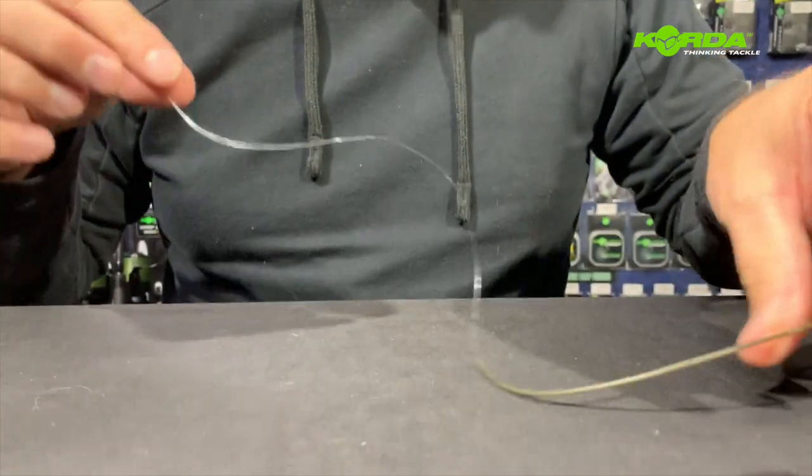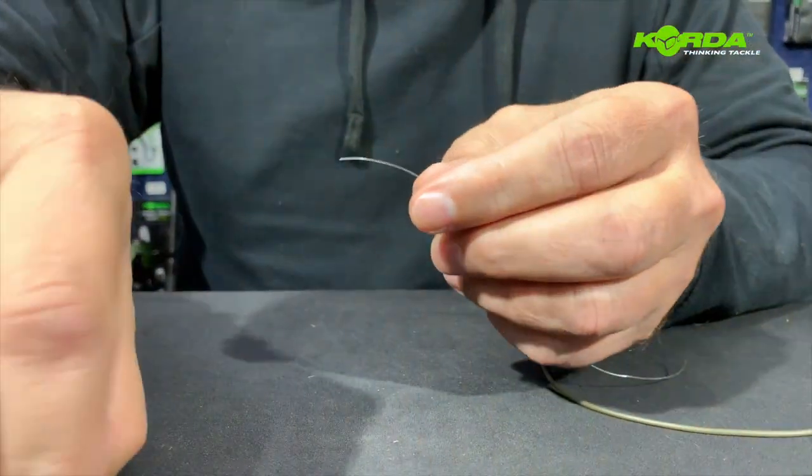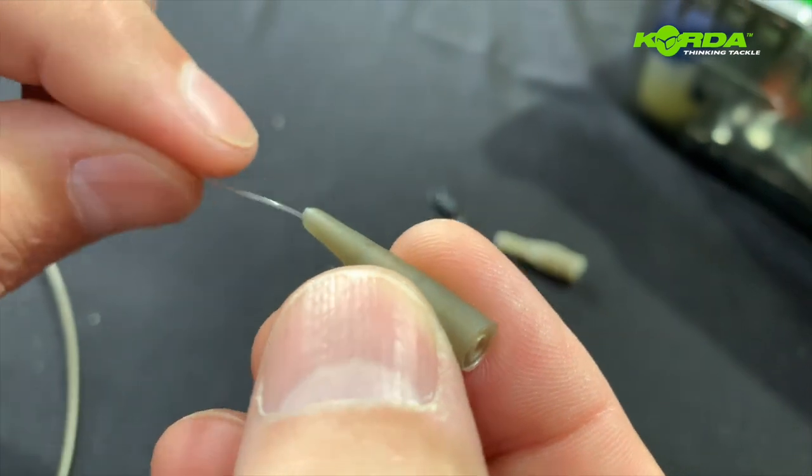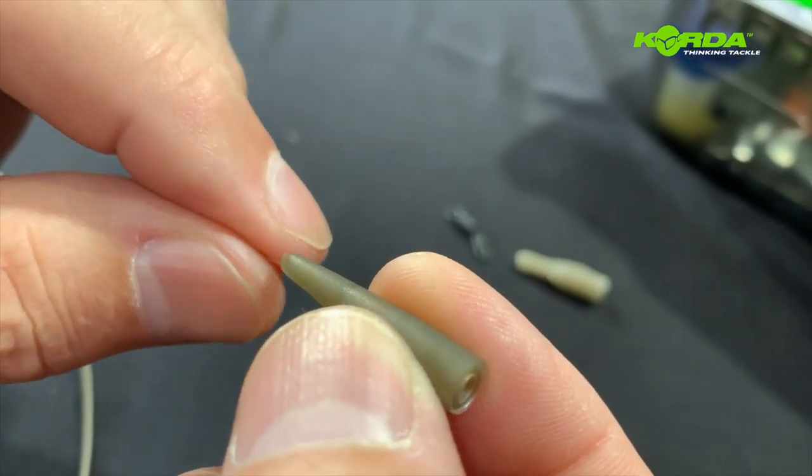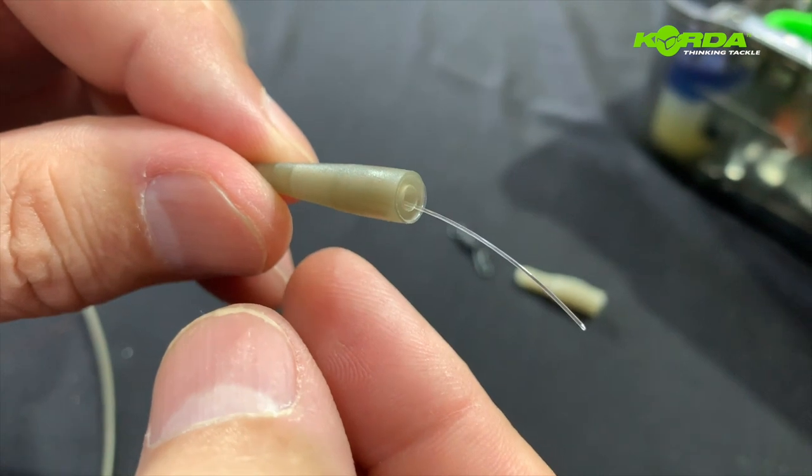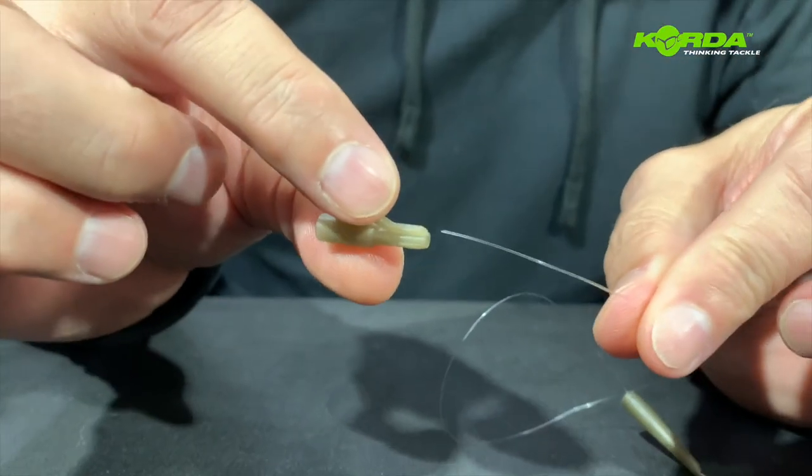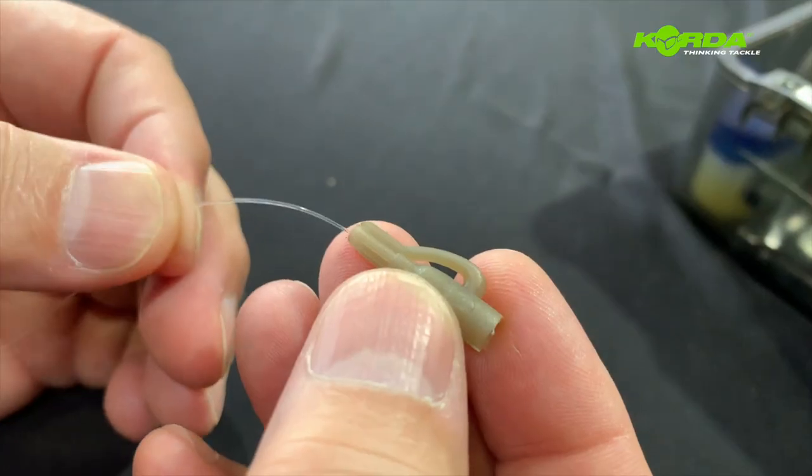I've now threaded through. The next thing I'm going to add is the tail rubber. And then the lead clip, which I basically just push through.